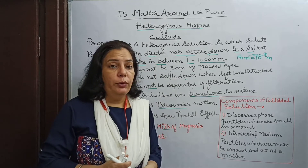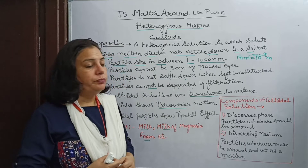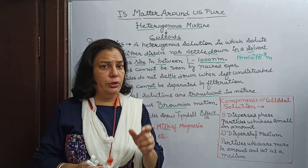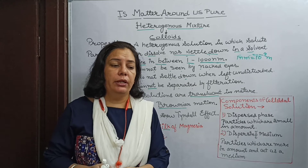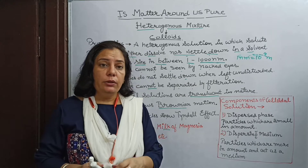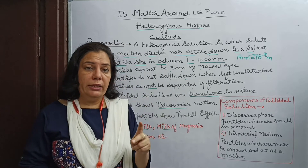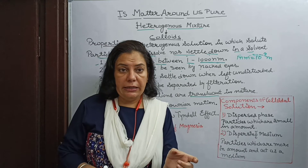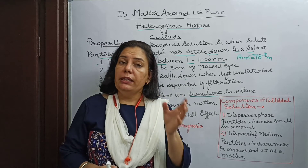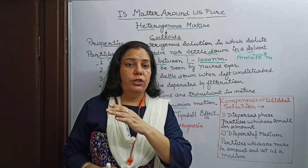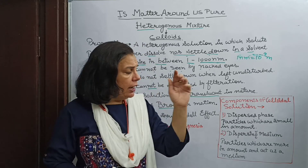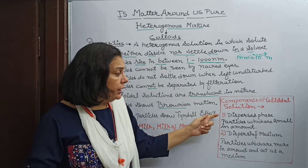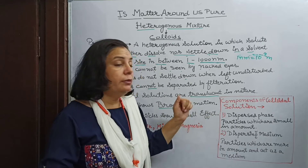Next, what are the components of a colloidal solution? As we have already learned about true solutions — a solution has two major parts: first is solute, which is always less in amount, and second is solvent, which is more in amount. Now, in colloidal solutions, we use two different terms: dispersed phase and dispersing medium.